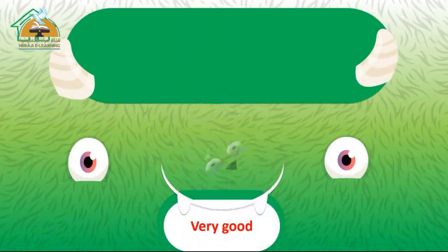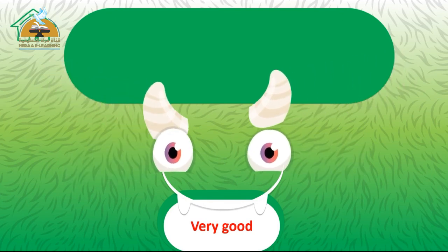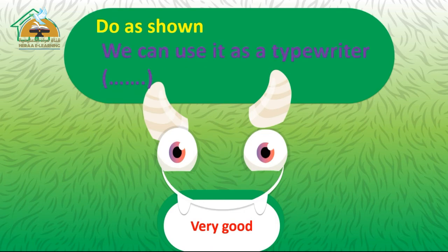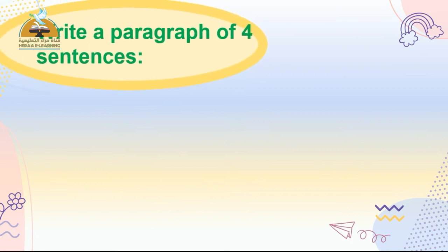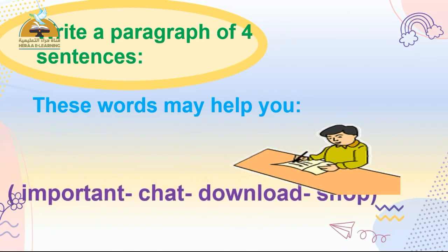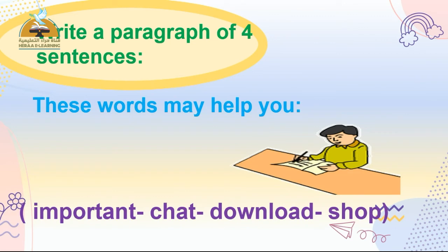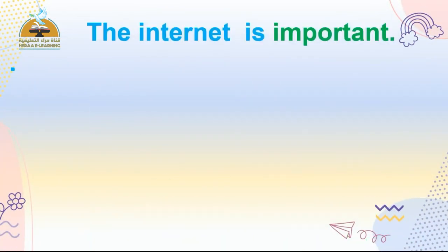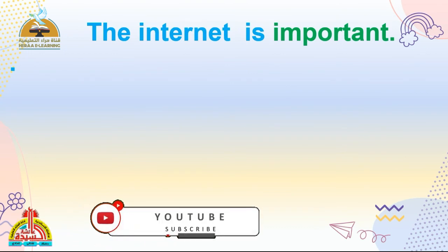وقت excel yourself — اختبر نفسك. We can use it as a typewriter — give one word. يعني حطي كلمة واحدة. We can use it as a typewriter — give one word. بعد كده، write a paragraph of four sentences about the internet. These words may help you: important، chat، download، shop.